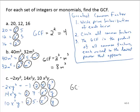So then the GCF: we have 2. We have to choose between x, x squared, and x cubed — we choose x. And we have to choose between y to the third, y, and y — we choose y. Remember, we choose the smaller exponents. So the GCF is 2xy.